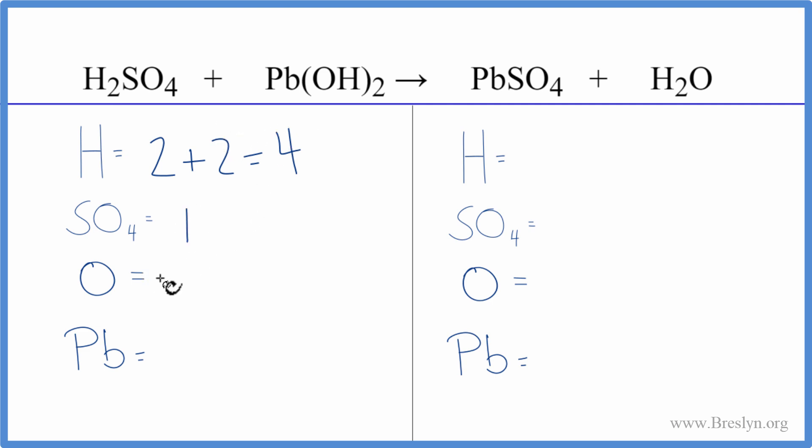We have oxygens, two times the one, so two oxygens. We don't count these because they're part of the sulfate. So we have just these two times one, two oxygens, one lead atom. On the product side,